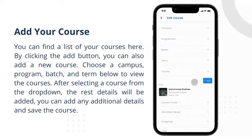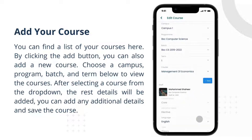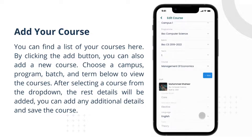Choose a campus, program, batch, and term below to view the courses. After selecting a course from the dropdown, the rest of the details will be added. You can add any additional details and save the course.